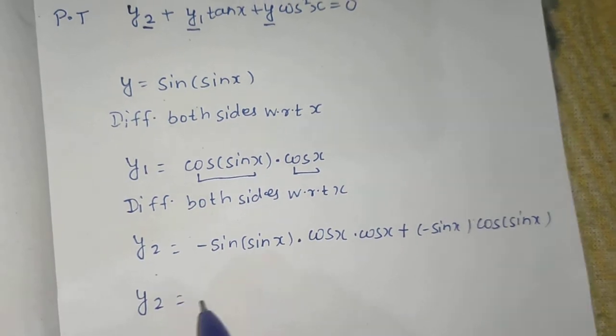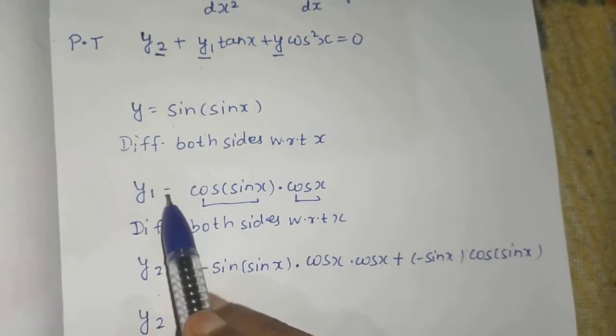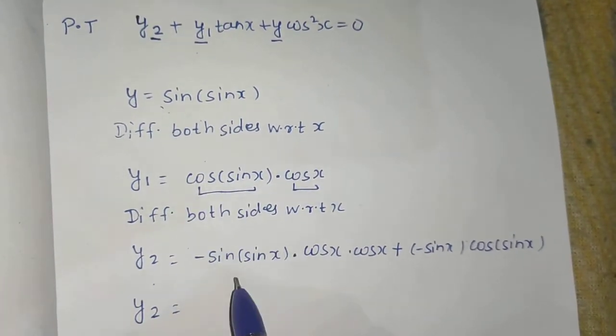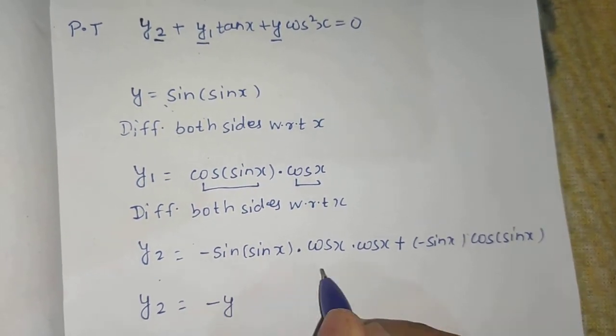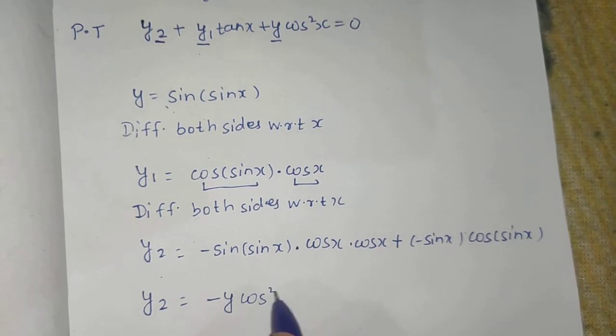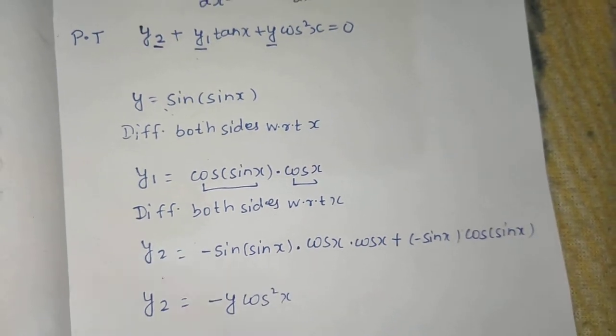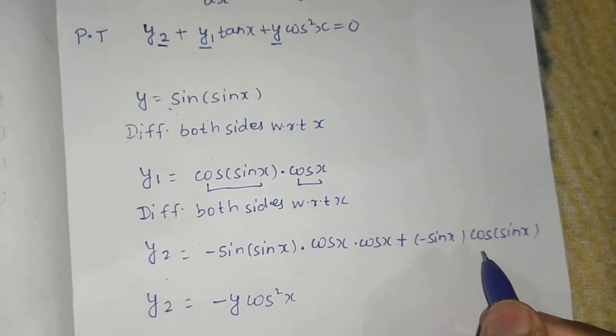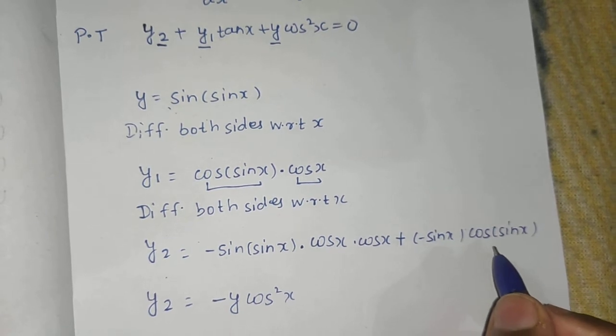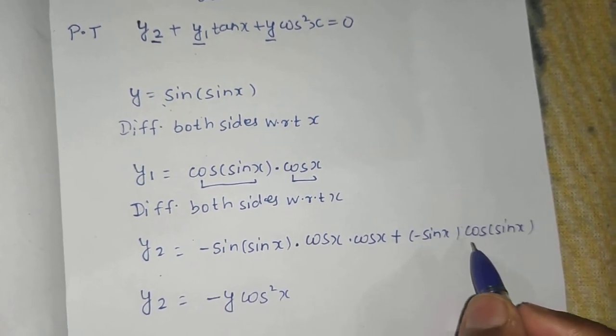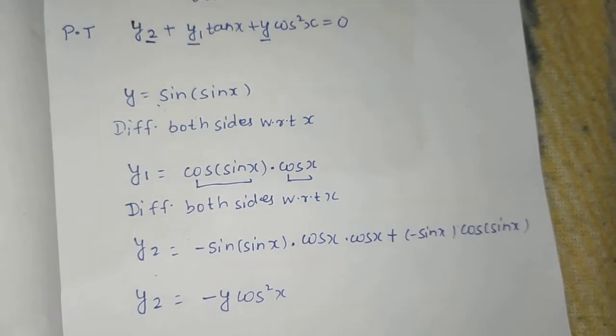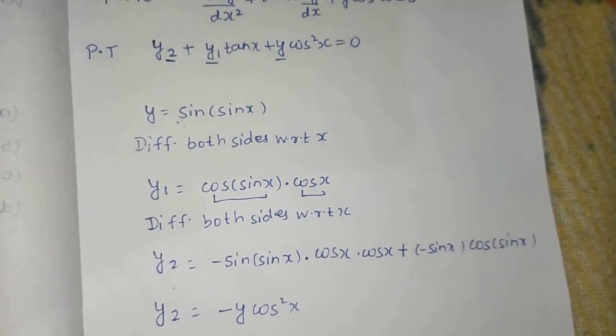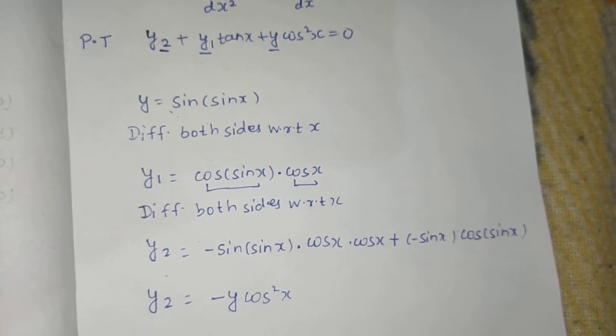So y2 equals to, now what was your y? Y was your sine of sine x. So this can be written as minus of y, and this is cos square x. Now cos of sine x, if you look, you can write that as y1 divided by cos x.